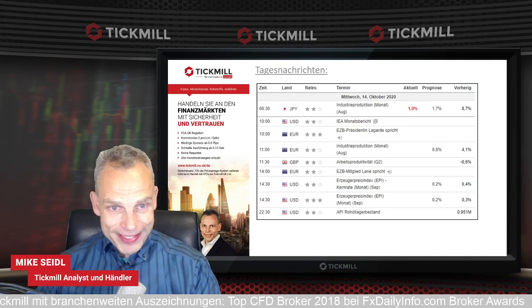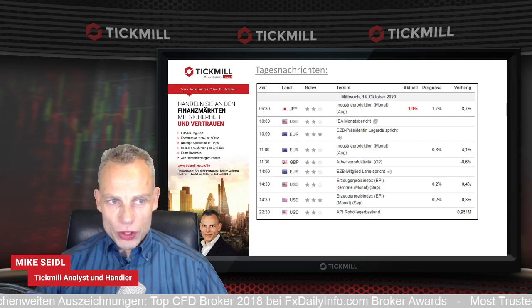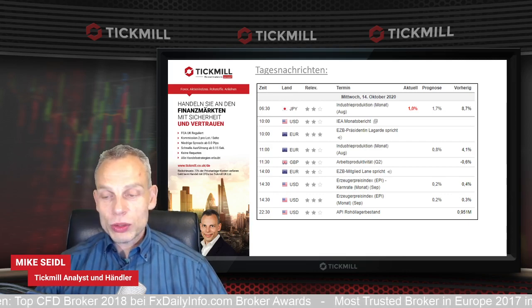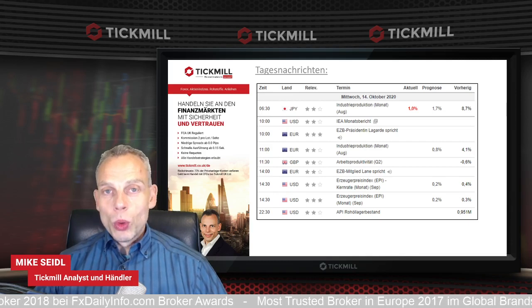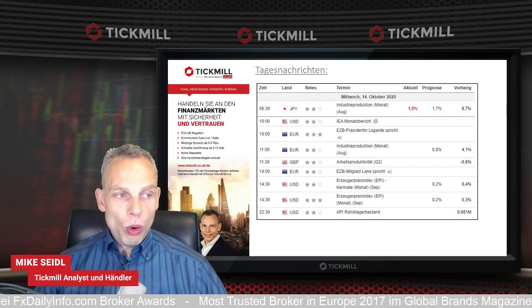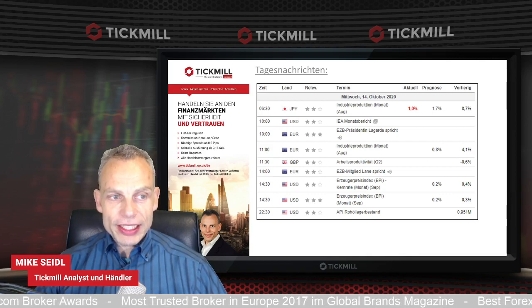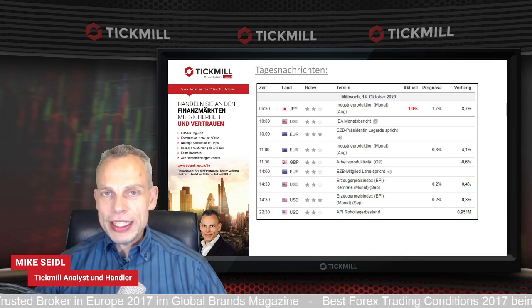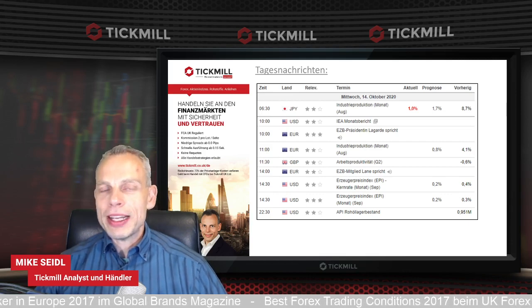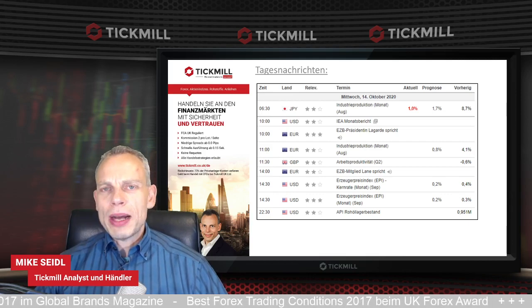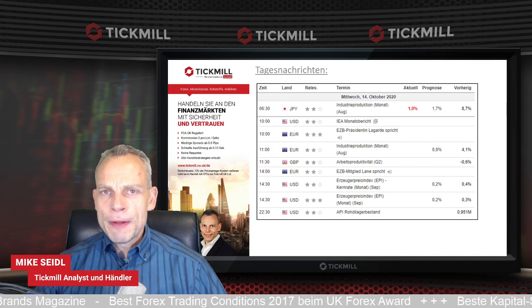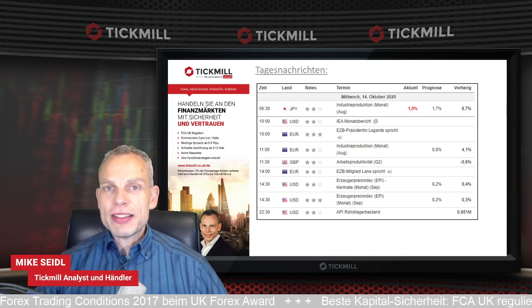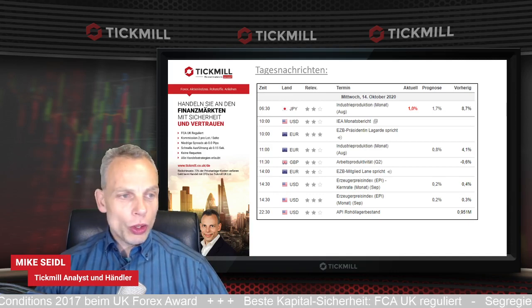Bei den Nachrichten: Meldungen aus Japan – die Industrieproduktion für August liegt bei +1 Prozent, deutlich weniger als im Vormonat und weniger als die Prognose. Daher die Zahl in Rot. Die IEA aus den USA bringt ihren Monatsbericht – die Energieagentur zeigt, wie sich der Energieverbrauch entwickelt. Eine brummende Wirtschaft braucht mehr Energie als eine lahmende. Das könnte Einfluss auf Energierohstoffe wie Öl haben. Frau Lagarde spricht heute um 11 Uhr.